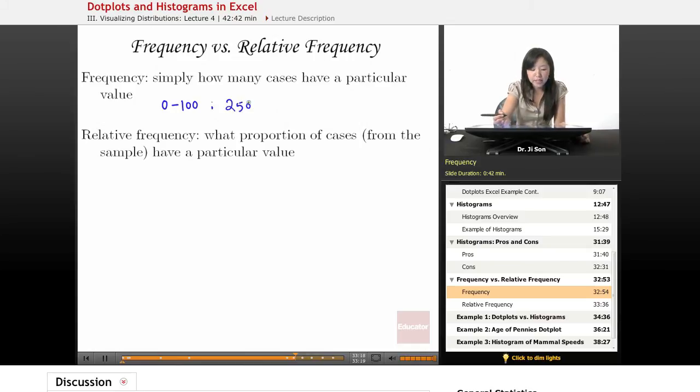How many cases have a particular value between, let's say, 101 and 200? Well, maybe that's 240 people. So this is basically what frequency looks like—it's just counting.